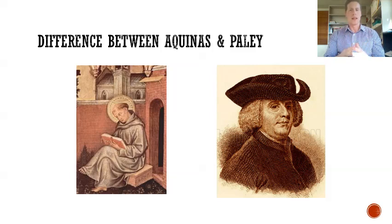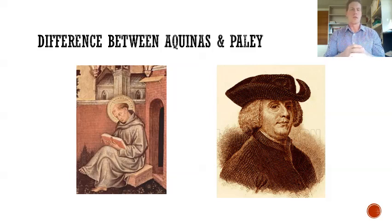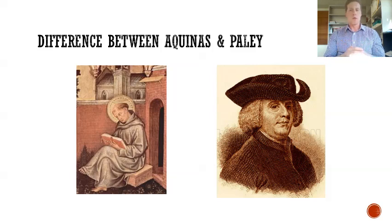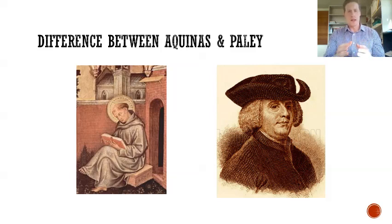William Paley focuses on an argument from design. From the order, purpose, and regularity in the universe, there is a clear design apparent, and from this design we can conclude that there is God. The purpose argument: Paley focuses on the manner in which things fit together in a particular way for a purpose. He gives examples like the human eye, an intricate mechanism of the human body. The eye is designed in such a way to create the ability to see.